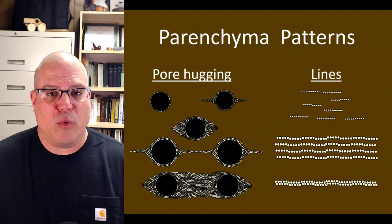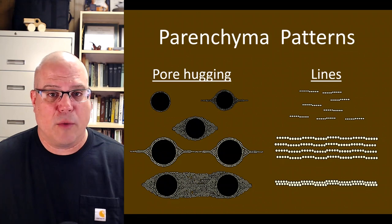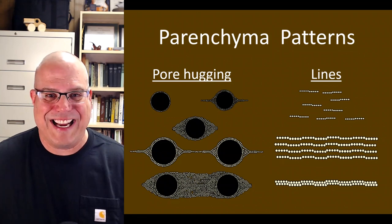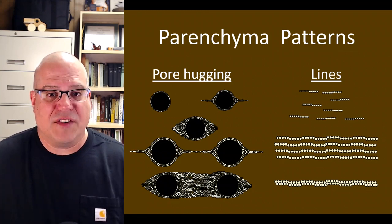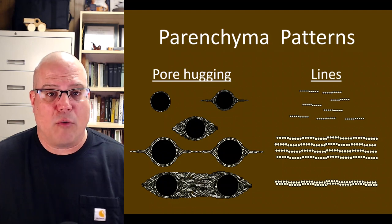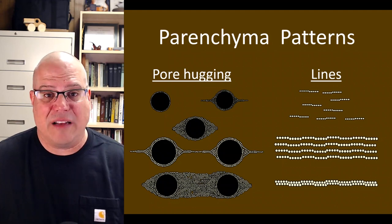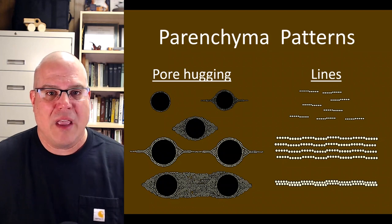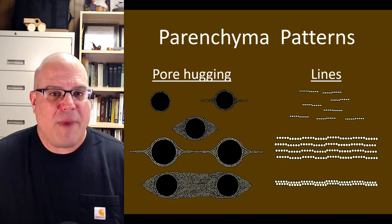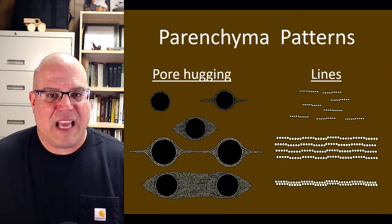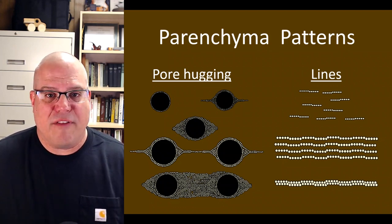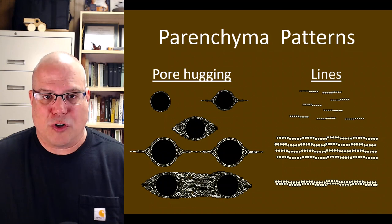These patterns differ from wood to wood, so they're useful for separating one kind of wood from another when viewed with a hand lens. Among North American hardwoods, there are two general kinds of parenchyma patterns: the pore-hugging kind and the line kind. While the pore-hugging kind encircles or forms a sheath around pores, the line kind does not — it just forms horizontal or tangential lines that may touch a pore here and there, but don't envelop or encircle it.